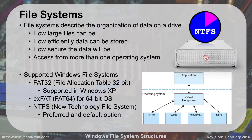NTFS is the preferred and default option for Windows. But if you need to interact with a Macintosh system, it can only read from NTFS — it can't write to NTFS. So if you have to go back and forth with an external hard drive, you may want to use FAT32 or FAT64, because those will work on both. FAT32, which stands for File Allocation Table 32-bit, was supported by Windows XP. In newer operating systems it can read and write to it, but for your main OS you still want to use NTFS.